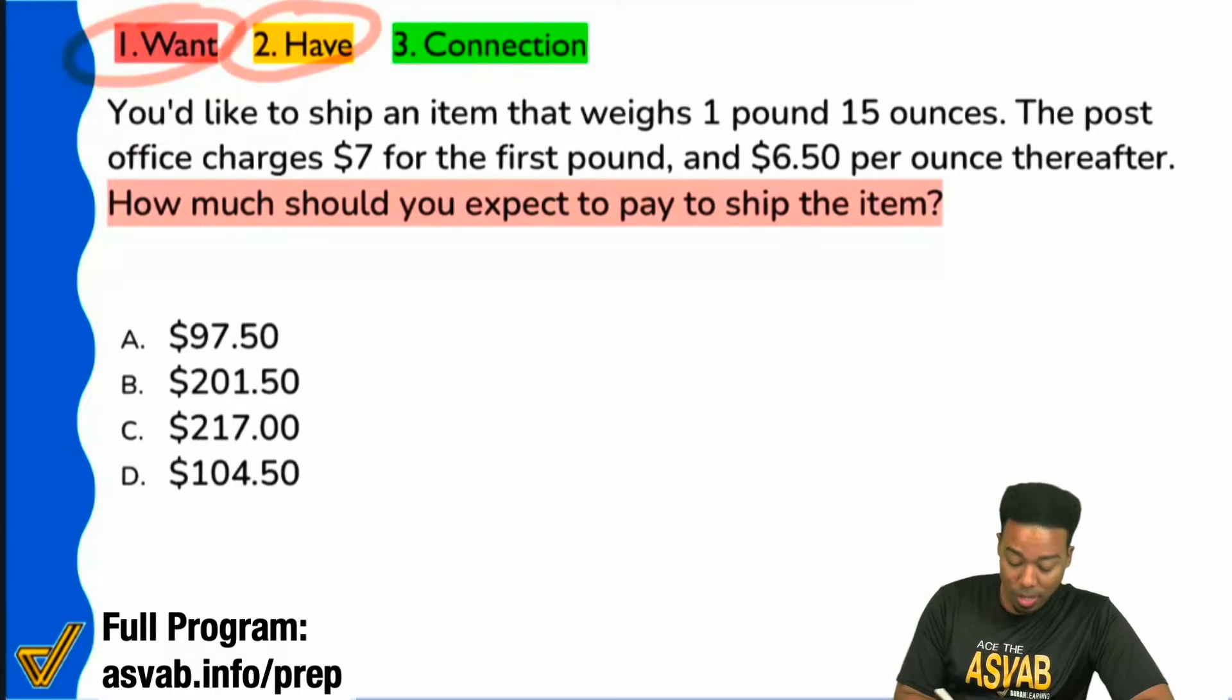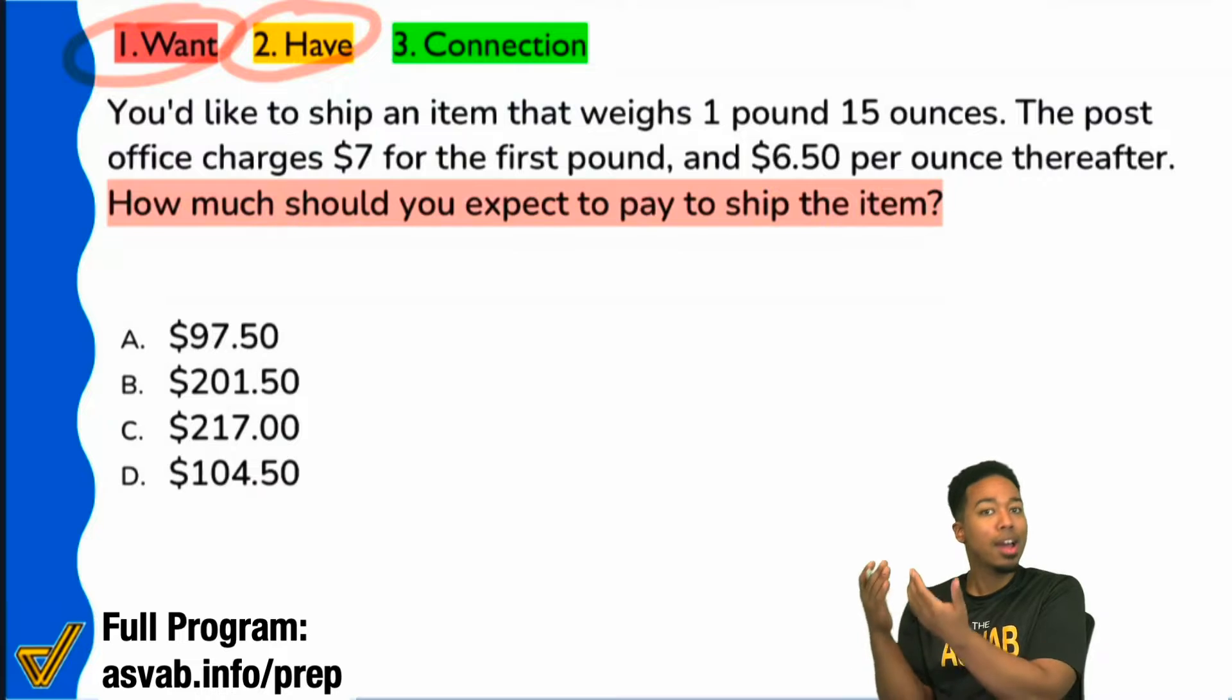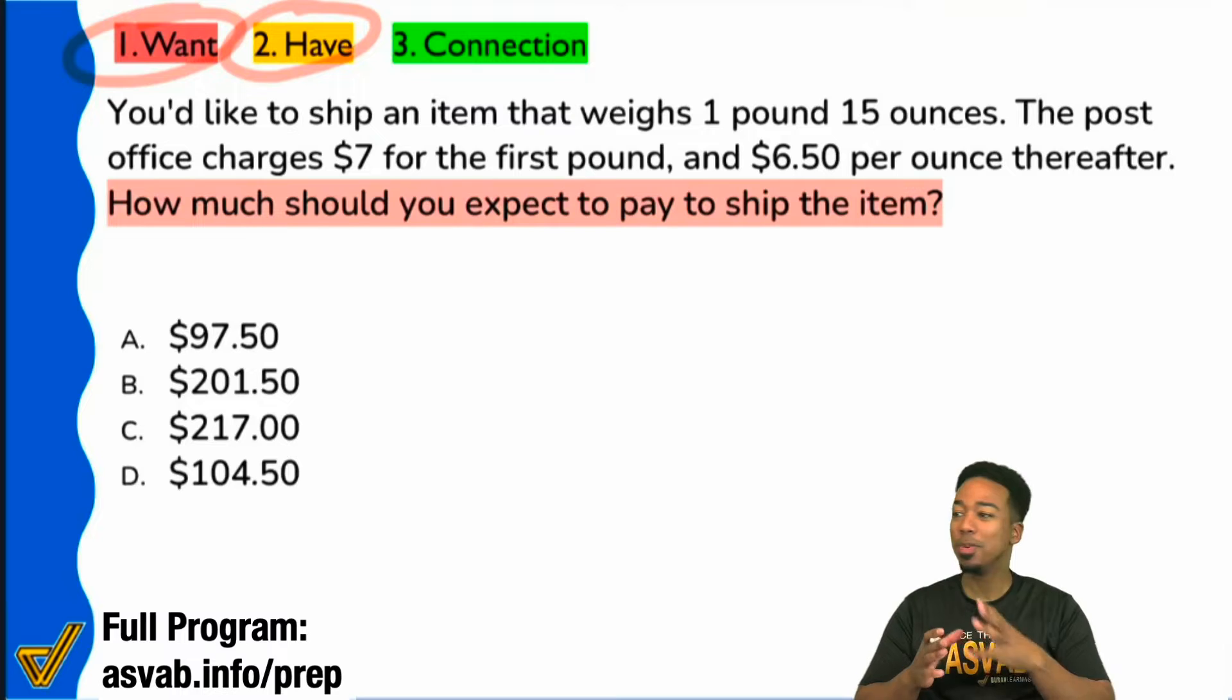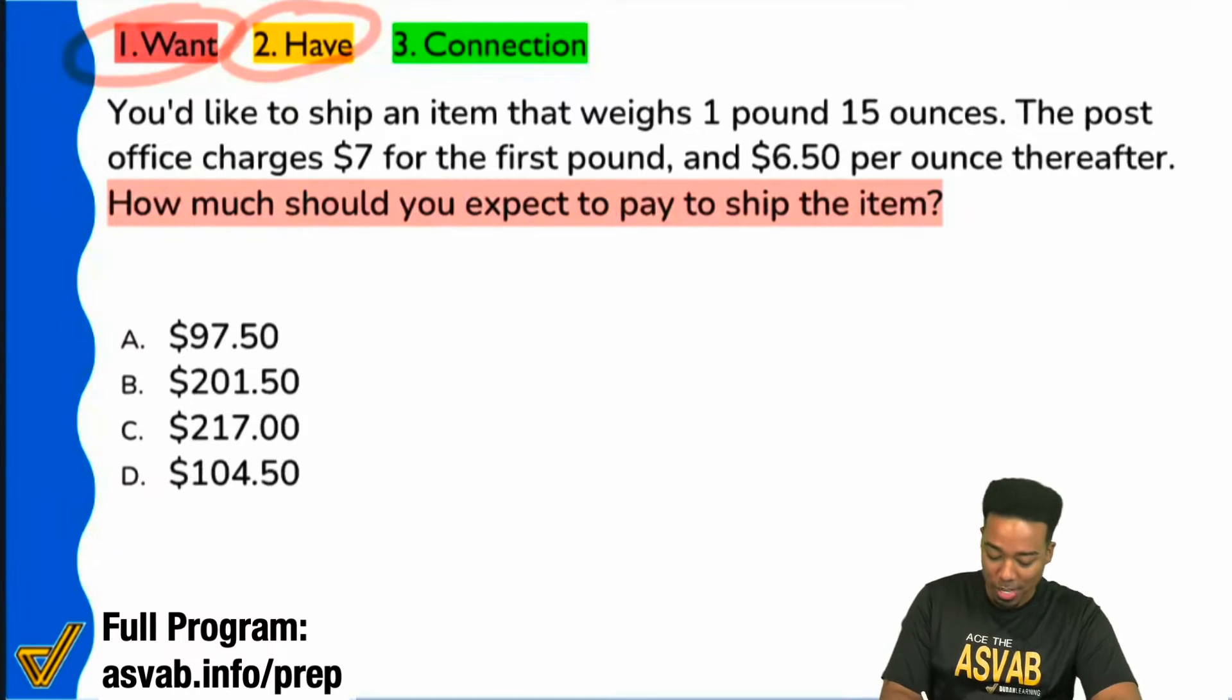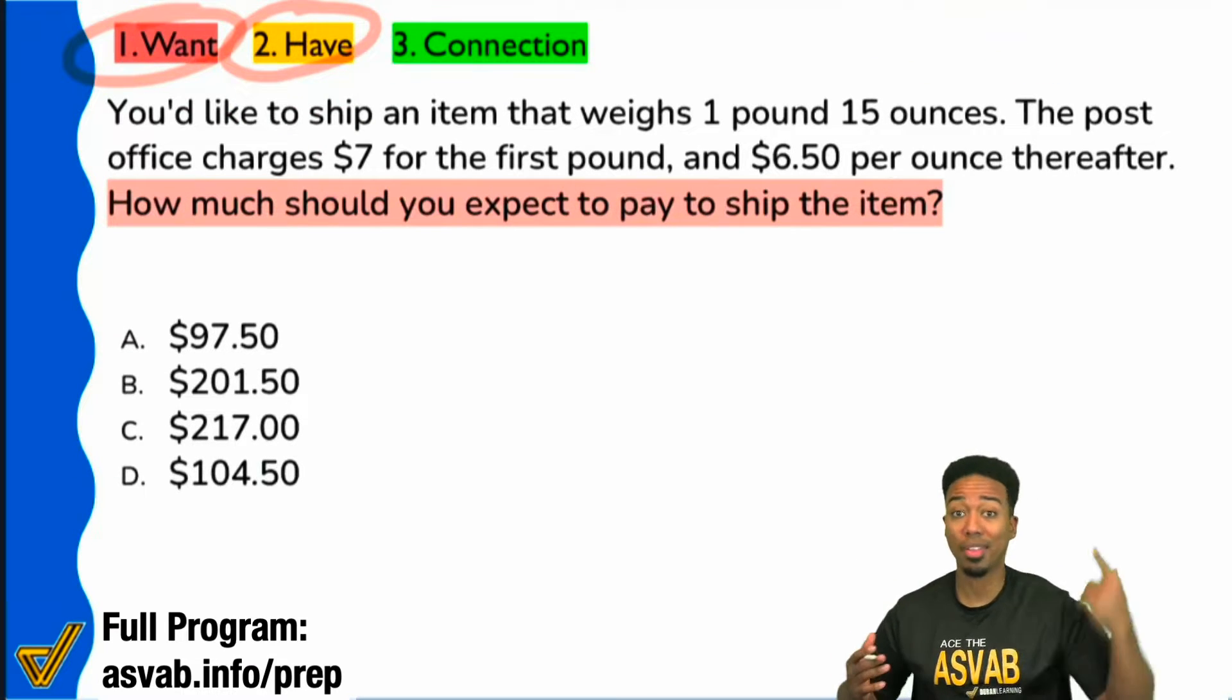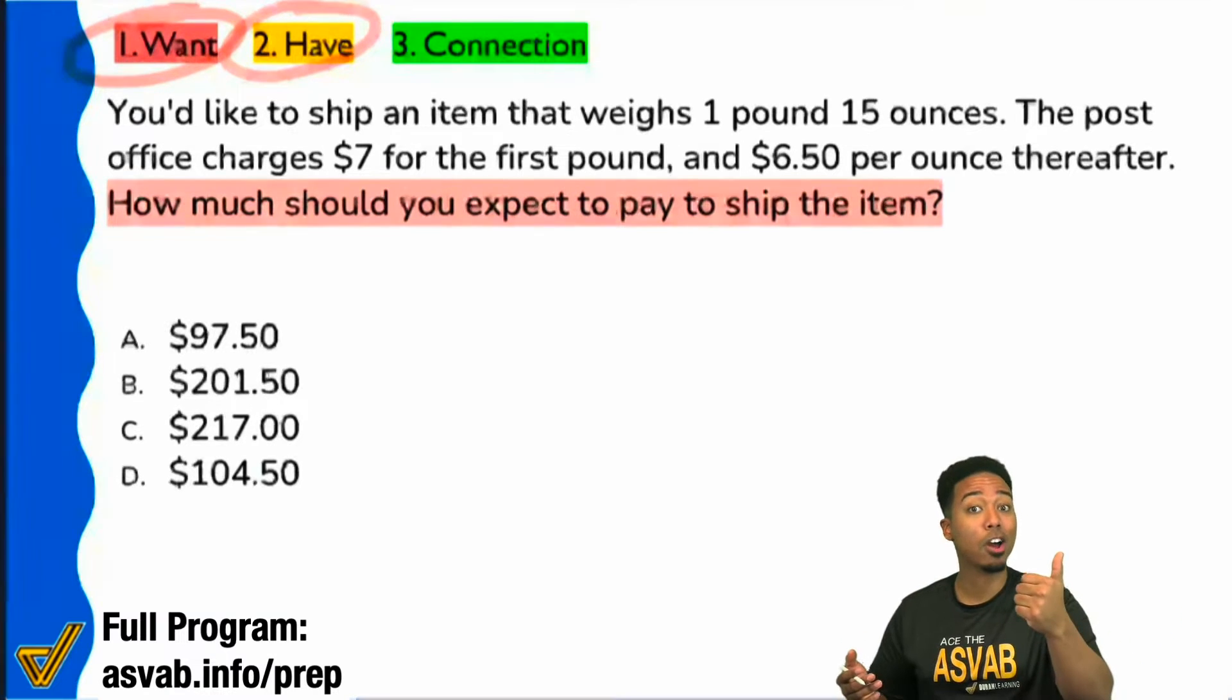The next question is going to be, what do you have? What information is going to tell you how much you're supposed to pay to ship the item? Notice how that process becomes a little easier than just beginning to read. You'd like to ship an item that weighs one pound, 15 ounces. Why does that matter? You don't know why that one pound, 15 ounces matters until you know the goal.